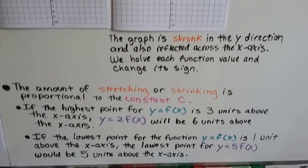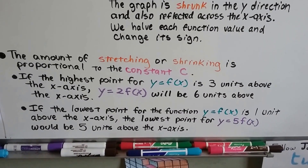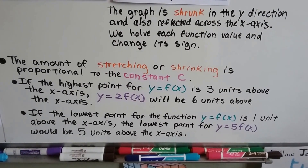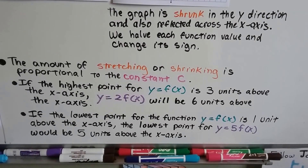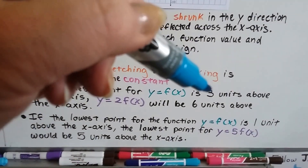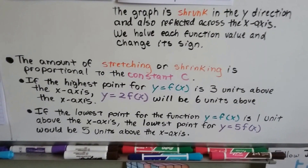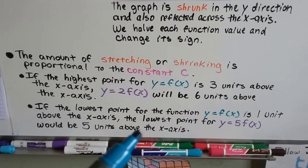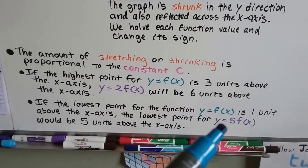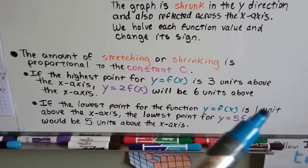The amount of stretching and shrinking is proportional to the constant c. If the highest point for y equals f(x) is 3 units above the x-axis, then y equals 2 times f(x) will be 6 units above it, because we do 2 times 3 — we're doubling what it was. And if the lowest point for y equals f(x) is 1 unit above the x-axis, the lowest point for y equals 5 times f(x) would be 5 units, because that 1 times the 5.